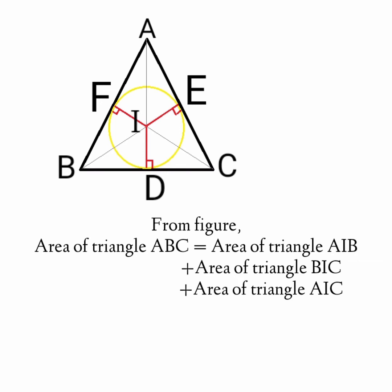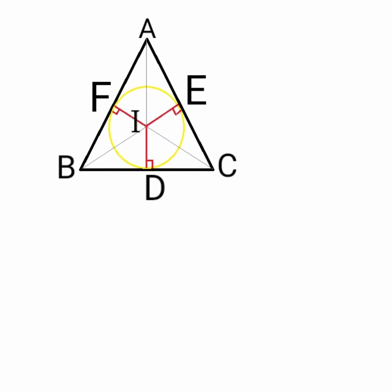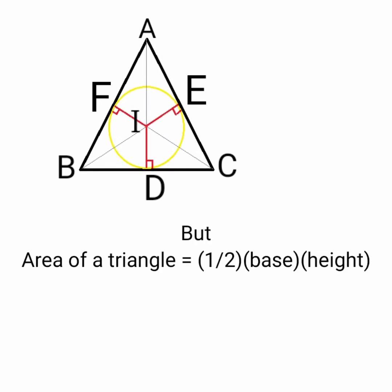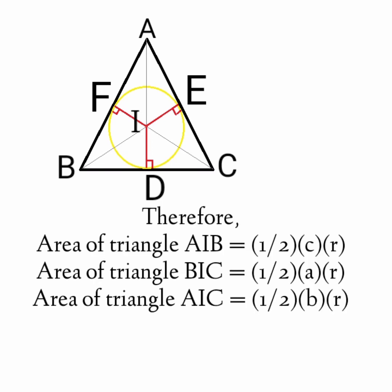From the above figure, the area of triangle ABC is equal to the area of triangle AIB plus the area of triangle BIC plus the area of triangle AIC. Since the area of a triangle equals half times base times height, for triangle AIB, taking AB as the base, the height is the length of line segment IF. Therefore, the area of triangle AIB equals half times AB times IF, which equals half times C times r.